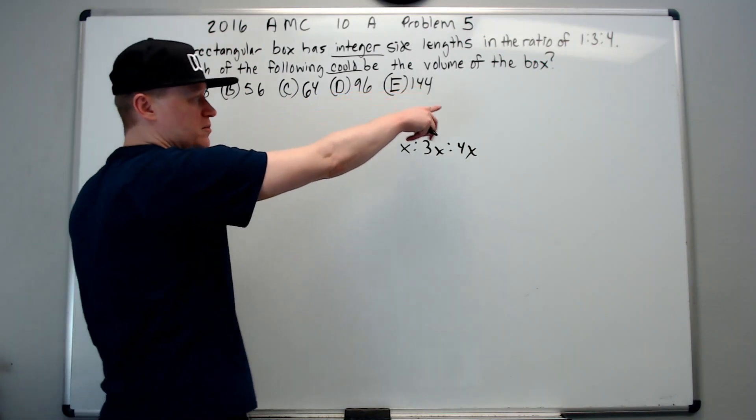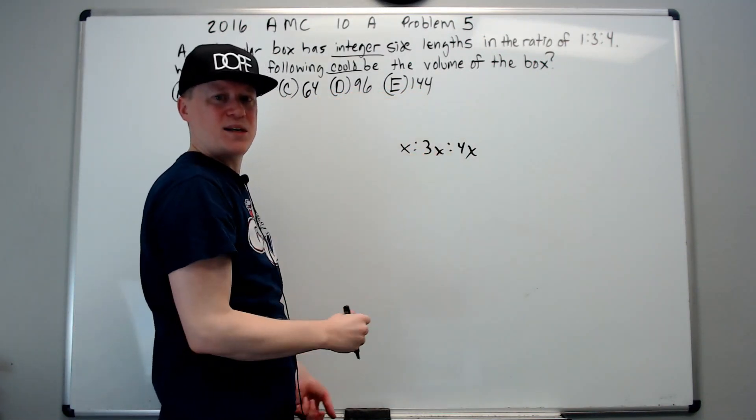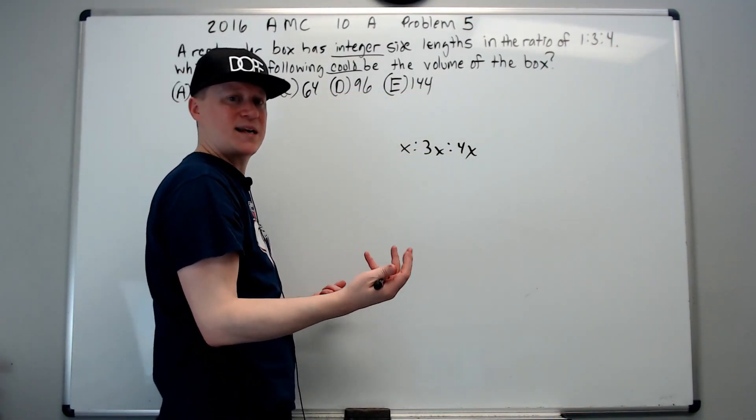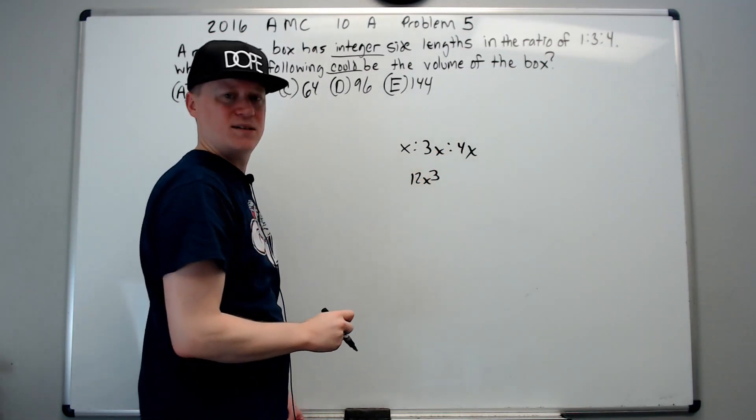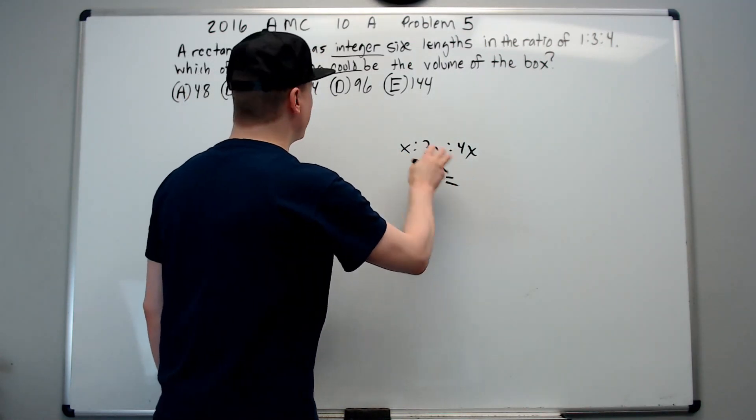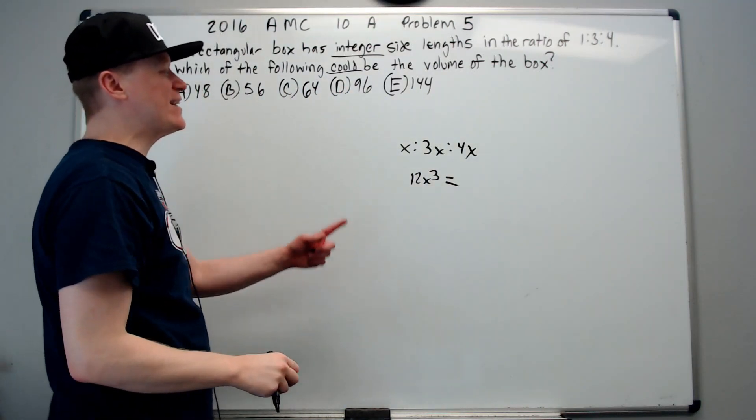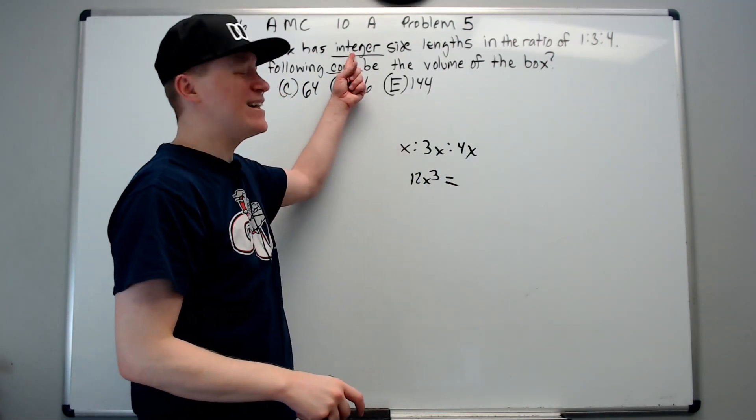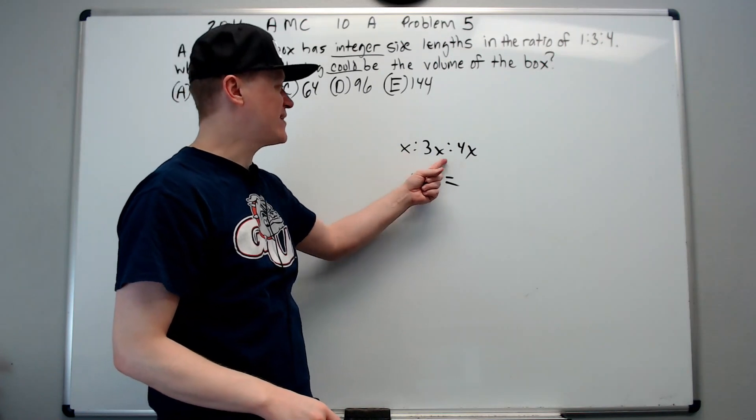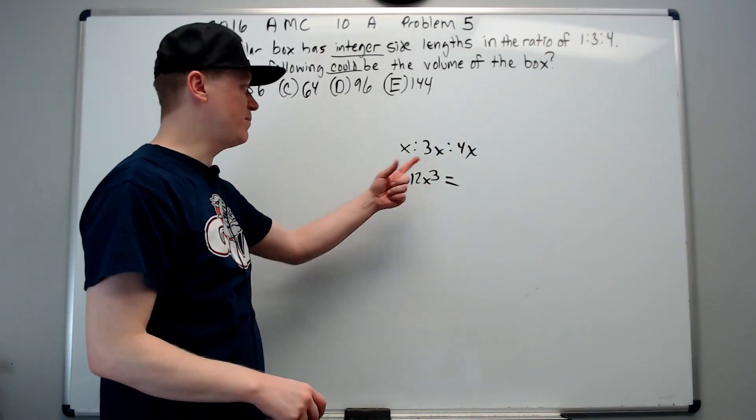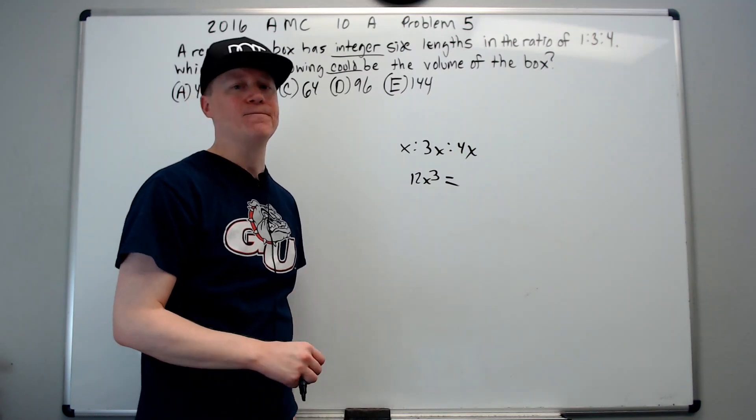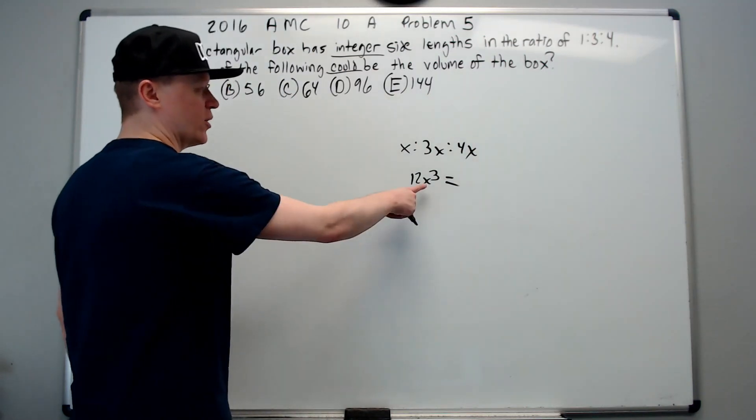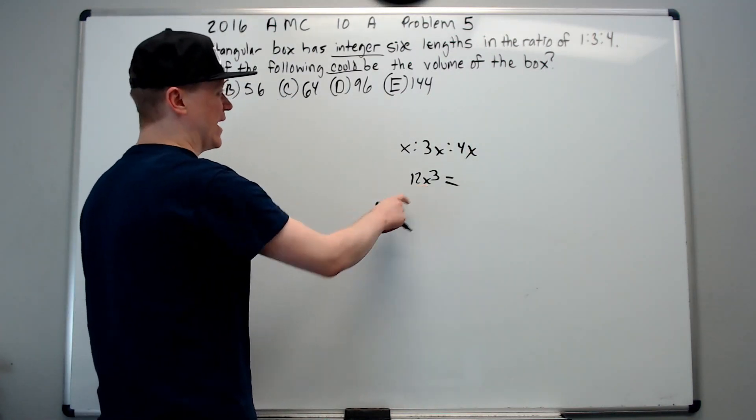It talks about volume. The volume is the product of the three lengths of the rectangular box. So this times this times this is 12x cubed. You need this to equal one of these things. And keep in mind, because it said integer, x has to be an integer. If it's anything but an integer, some of these won't come out to be integers. And that's not okay. So we need an integer for it.